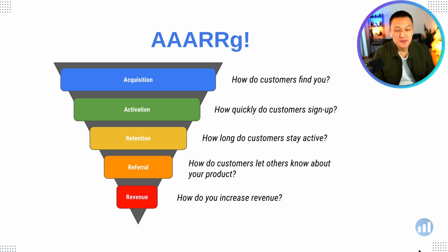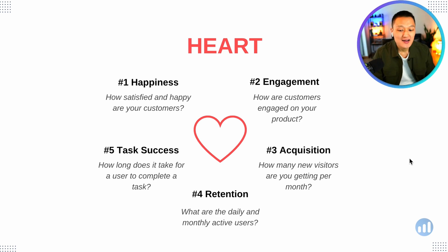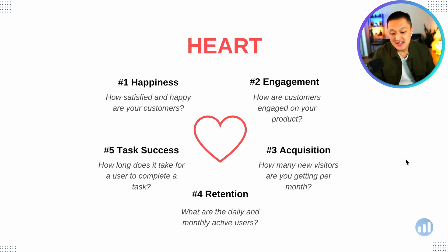Another useful metric framework is HEART, created by Google's UX research team. It measures five dimensions: Happiness, Engagement, Acquisition, Retention, and Task Success. Happiness measures how satisfied and happy your customers are. Engagement measures how customers interact with your product. Acquisition measures how many new visitors you're getting per month. Retention looks at daily and monthly active users. And Task Success measures how long it takes for a user to complete a task.